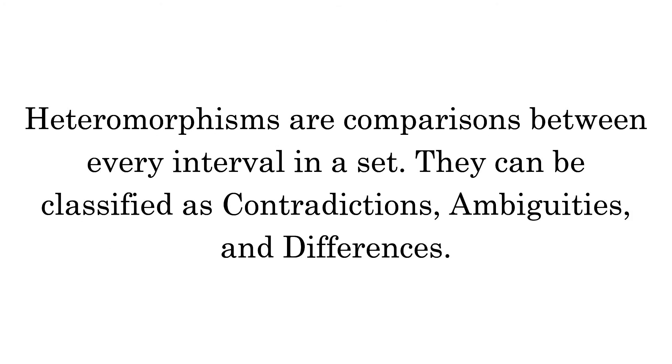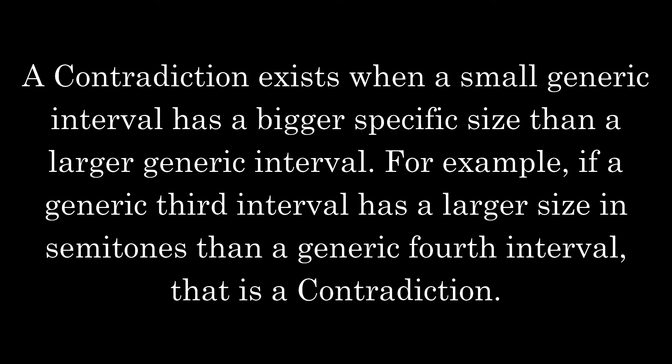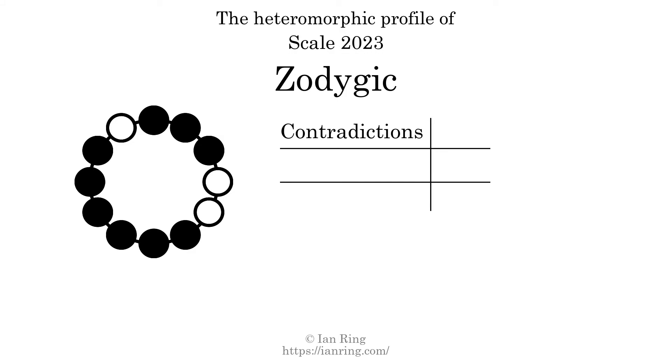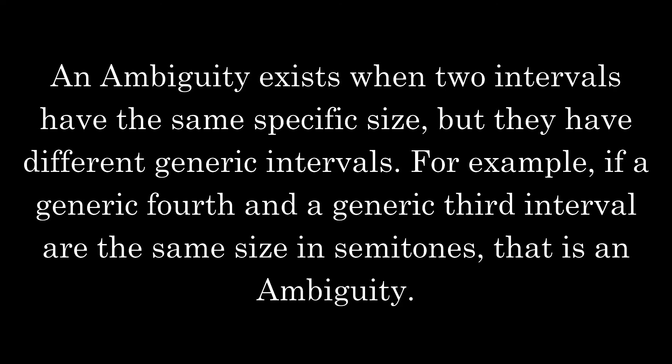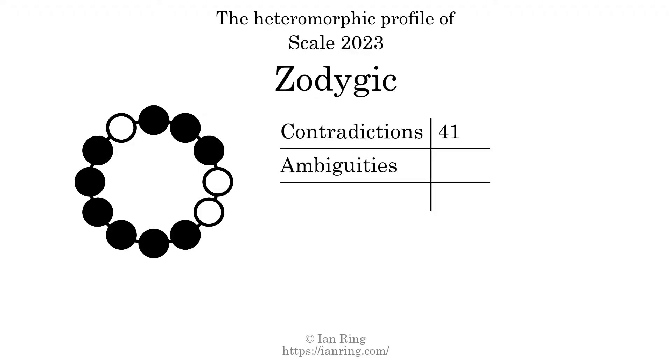Heteromorphisms are comparisons between every interval in a set. They can be classified as contradictions, ambiguities, and differences. A contradiction exists when a small generic interval has a bigger specific size than a larger generic interval — for example, if a generic third interval has a larger size in semitones than a generic fourth interval. The number of contradictions in this scale is 41. An ambiguity exists when two intervals have the same specific size but different generic intervals. The number of ambiguities in this scale is 103.